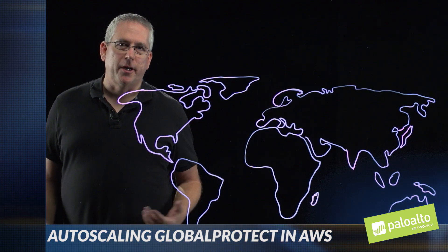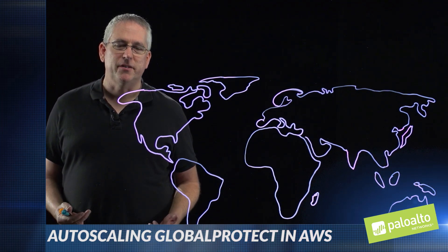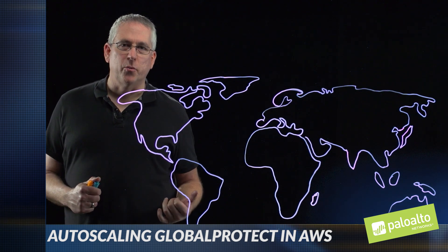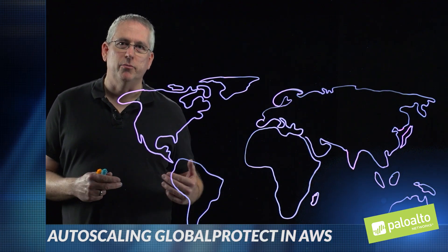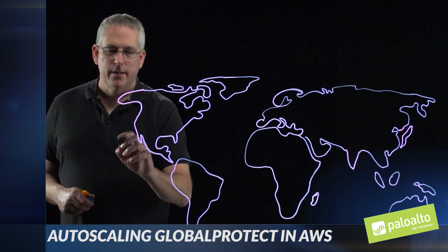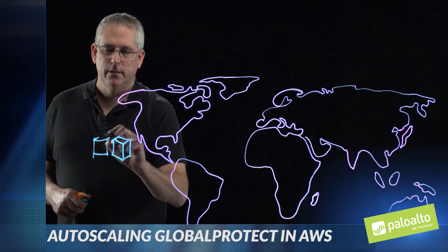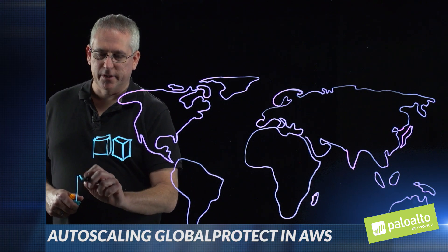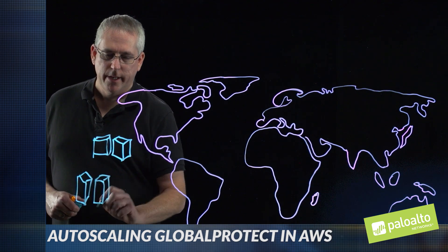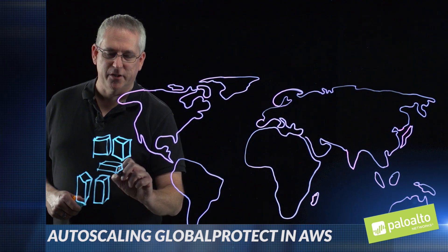In this example, let's talk about a large enterprise. They have employees all over the world with a large regional headquarters office, for example maybe on the West Coast of the United States. I'll draw a pair of large firewalls at the corporate data center, racks and racks of servers at this location, and we'll add in Panorama so we can manage everything centrally.